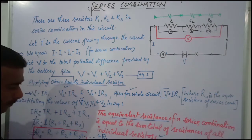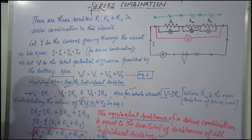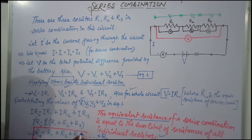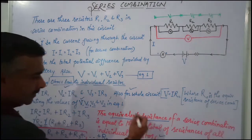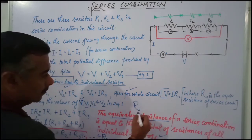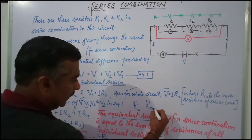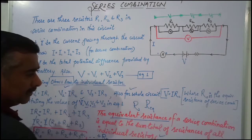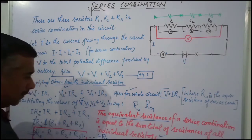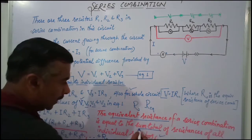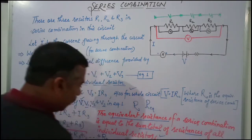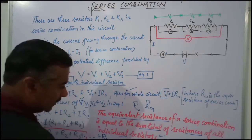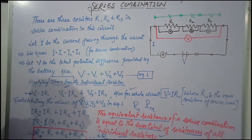So the equivalent resistance Rs — sometimes written as R_eq — of a series combination equals R1 plus R2 plus R3. If there are n number of resistors, then the equivalent resistance equals the sum of the resistances of all the individual resistors in the series combination.